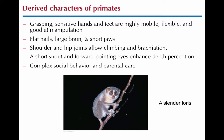Primates have large brains compared to their body size and short jaws. They also have really flexible hip and shoulder joints, which for many primates is very useful for climbing and swinging from tree to tree. The short snout — unlike a dog — means primates generally have a short snout and forward-pointing eyes.